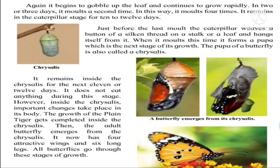As the caterpillar gobbles up the leaf continuously, the process of molting goes on a second time, a third time, and a fourth time. Altogether in the life cycle of a butterfly, the caterpillar molts four times and remains in the caterpillar stage for 10 to 12 days. After 10 to 12 days, the caterpillar starts weaving a button of silken thread on a stalk or a leaf and hangs itself from it. When it molts this time, it forms a pupa — the next stage.